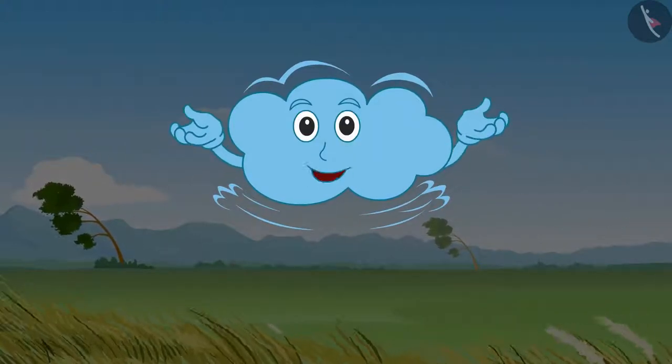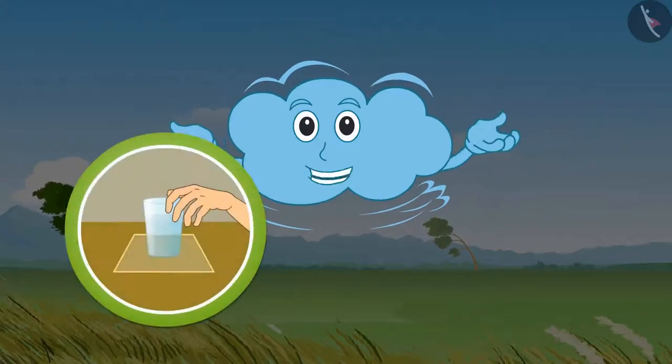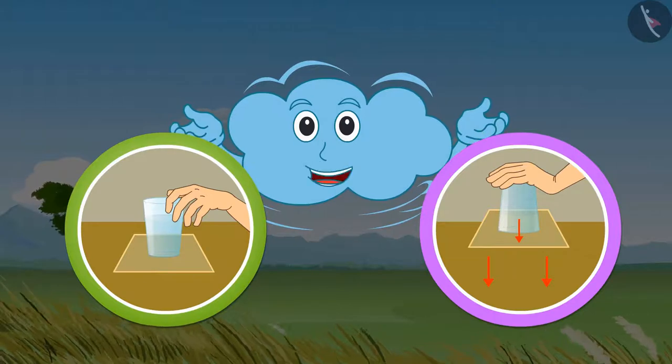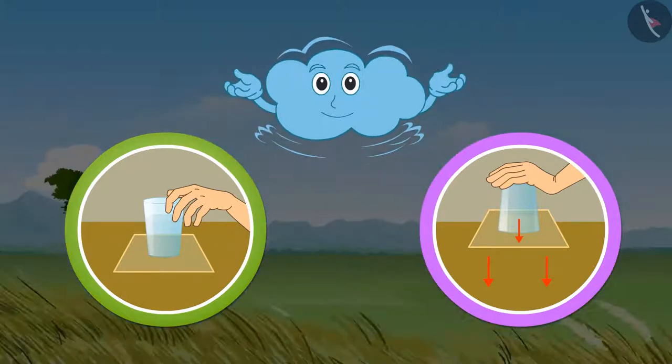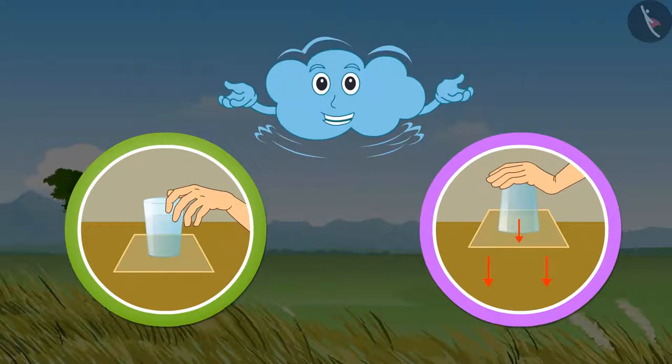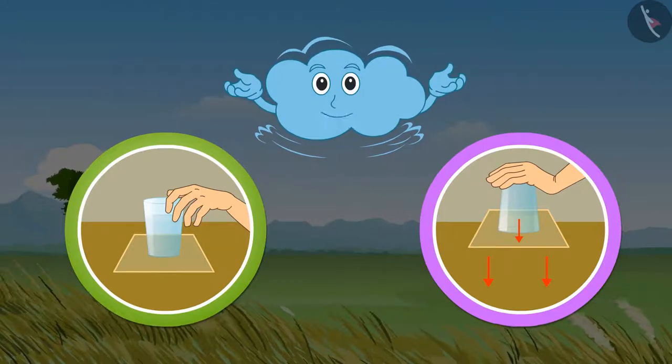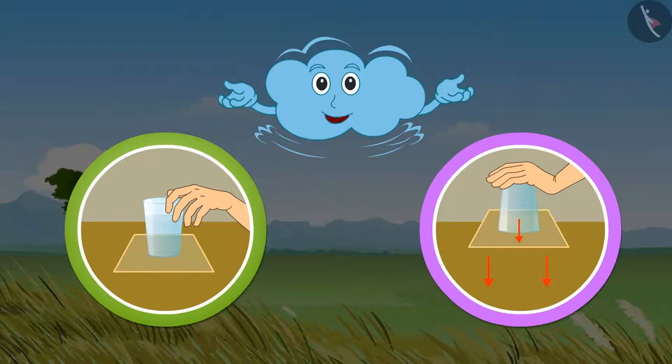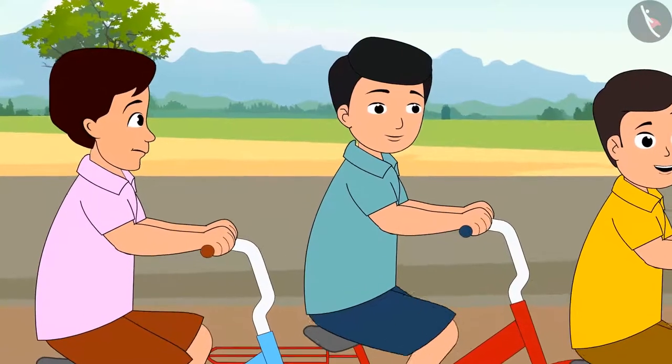Do you remember in the last video we conducted an experiment? We had taken one glass full of water and kept a square cardboard piece over it, then we had upturned the glass. Do you remember what had happened? The glass full of water did not fall. Did you find out why it had happened? We learned from this experiment that air or wind exerts pressure from all the sides, even from the upper areas.